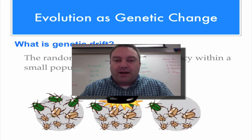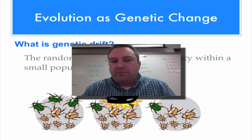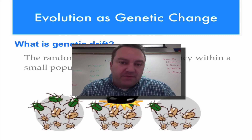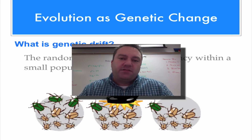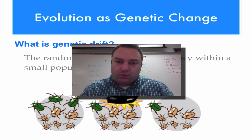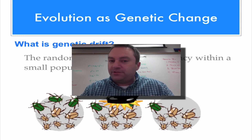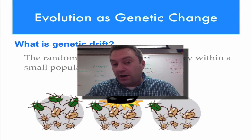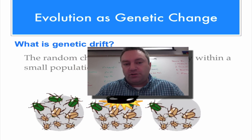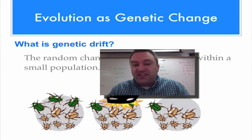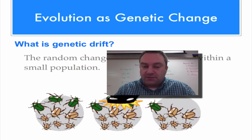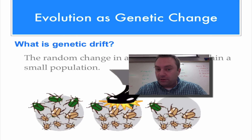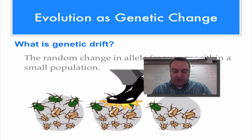Let's say we have a very small population — for example, less than 100 individuals, maybe as low as 50. Their gene pool is not very big, so for a particular single-gene trait, if you have 100 individuals that's only 200 alleles, and if you only have 50 individuals in this population then that's only 100 alleles.